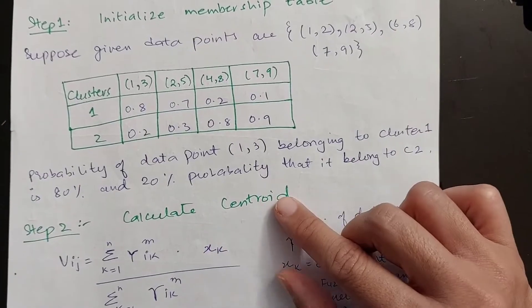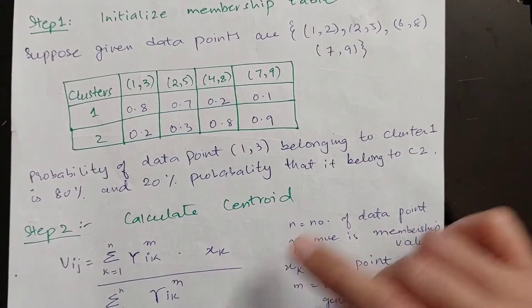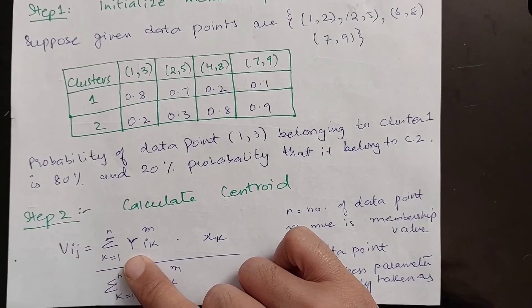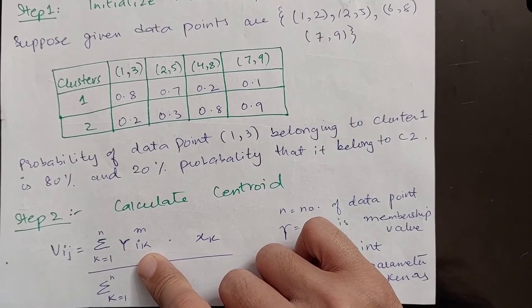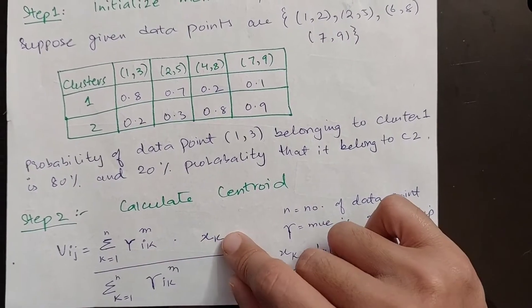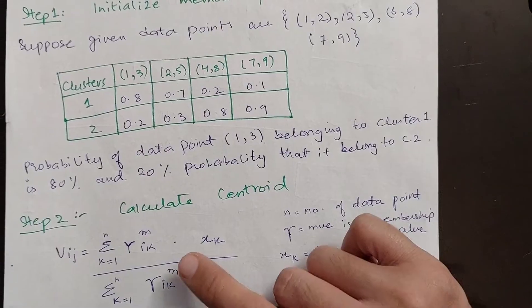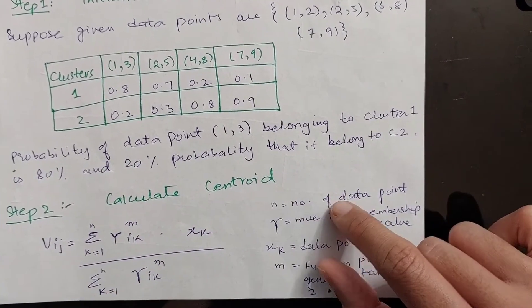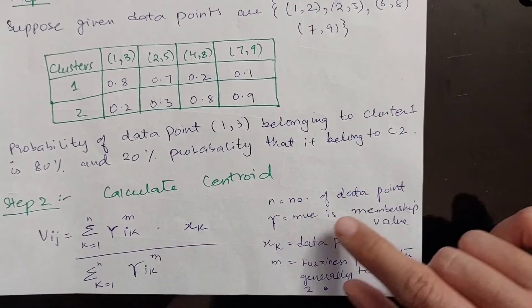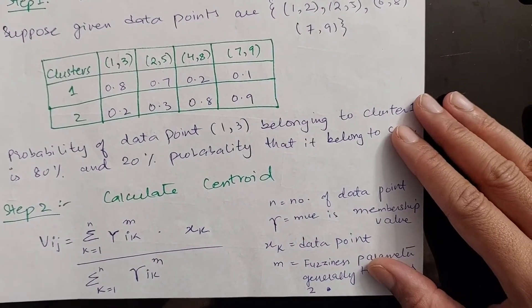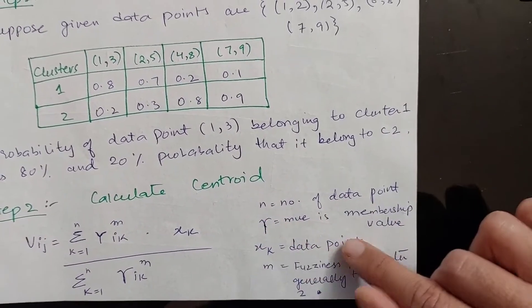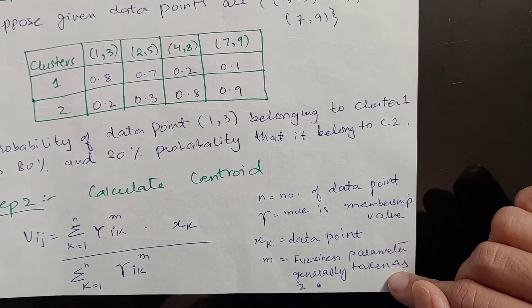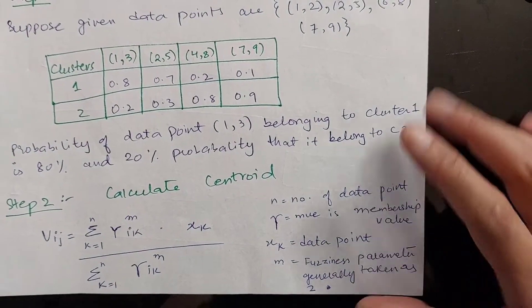In the second step, we calculate the centroids. The centroid formula depends on the value of mu, xk, and mu in the denominator, where nk ranges from 1 to n, and n is the number of data points. Mu is the membership value — the percentages. xk are your data points, and m is your fuzziness parameter, generally taken as 2.